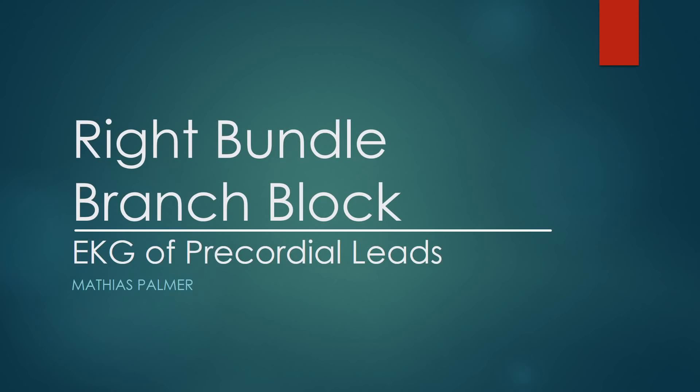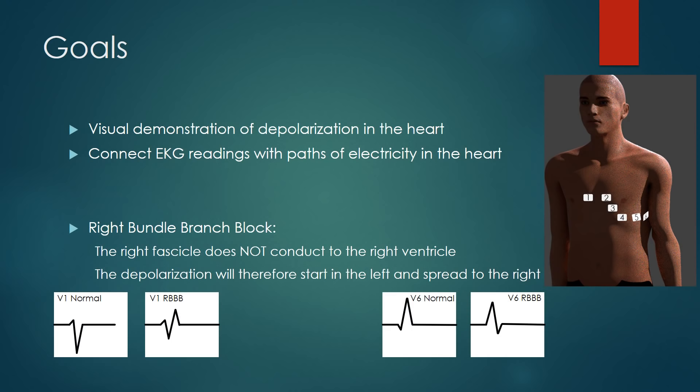Hi, my name is Matthias, and today I'm going to go over right bundle branch blocks and how they appear on the precordial leads of an EKG. I'm going to begin with a visual animation of a heart that's depolarizing. I'm then going to connect this animation with an EKG and demonstrate how the depolarization can be used to predict the appearance on an EKG, and vice versa, how an EKG can be used to predict the depolarization within the heart, and from that, how the pathology can be extrapolated.